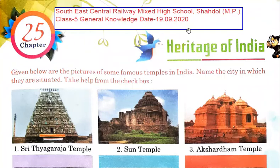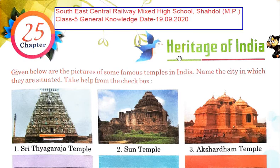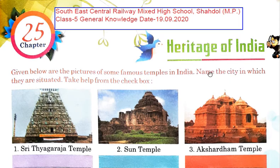Good morning students. This is Chapter 25 of Class 5 General Knowledge, and the name of this chapter is Heritage of India — Bharat ki Dharohar. Below are pictures of some famous temples in India. You have to name the city in which they are situated. Take help from the checkbox.